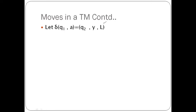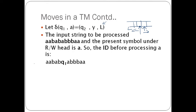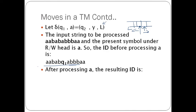We can also have a left movement. In the case of right movement, we move to the immediately adjacent right symbol. In the case of left movement, starting from the initial ID where the read-write head was positioned, we move one cell to the left. In the resulting ID, Q1 comes before B, the symbol A has been changed to Y, and the state has been changed to Q2.